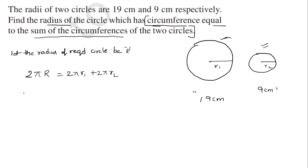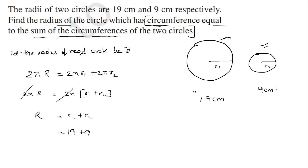Now, we take 2π as common, giving us 2π common with R1 plus R2. So 2π on both sides gets cancelled, and R is equal to R1 plus R2. R1 is 19 and R2 is 9, so the radius of the required circle is equal to 28 centimeters.